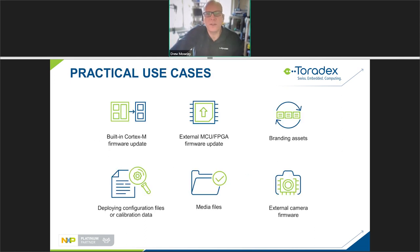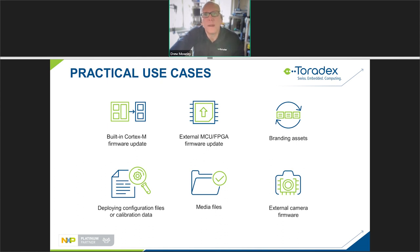So what are some of the practical use cases? I mentioned the idea of providing firmware updates for either the built-in Cortex-M that exists on just about all of our modules, or an external MCU on your custom carrier board. Those are fairly common use cases for customers who have specific real-time or low-power needs and want to offload some processing to a lower-power, more real-time chip. You can easily deploy a firmware update using this subsystem update — that could be an RTOS-based payload for a microcontroller, or bare-metal code, whatever you want.